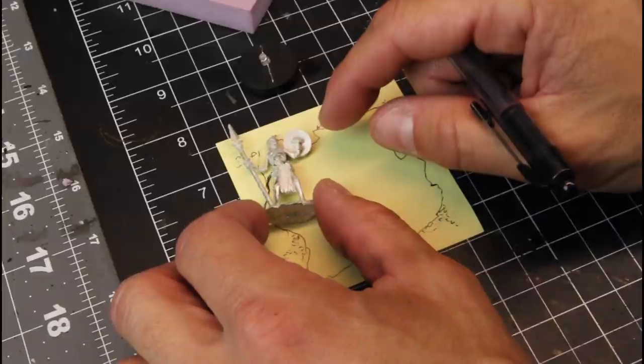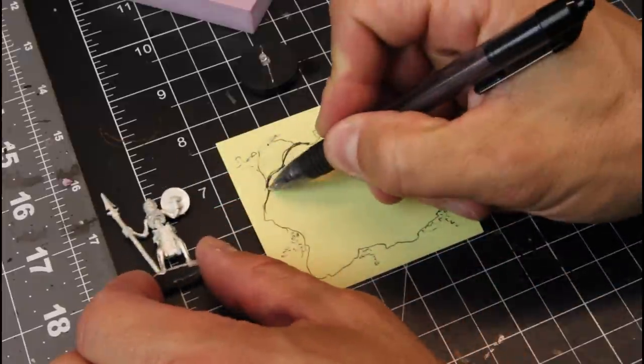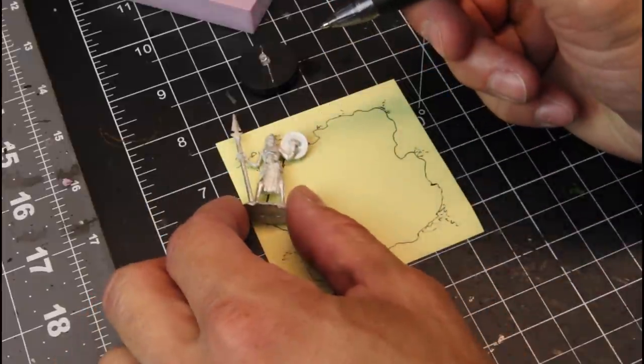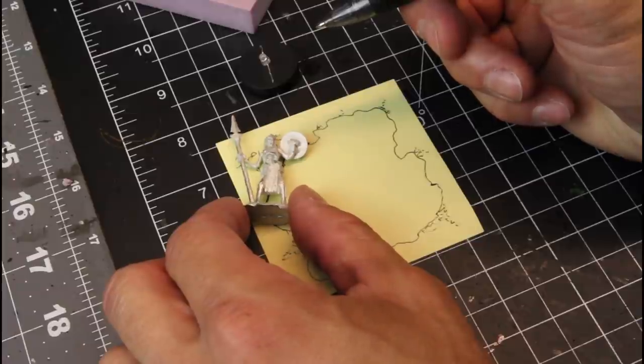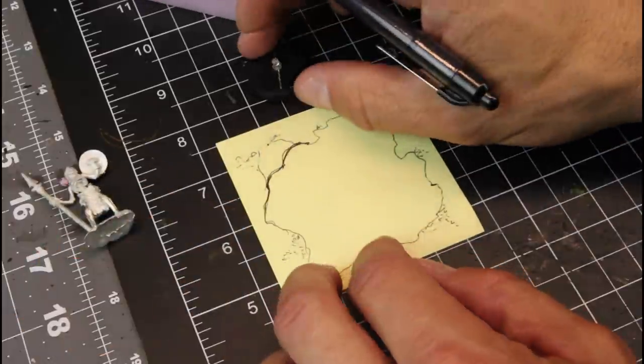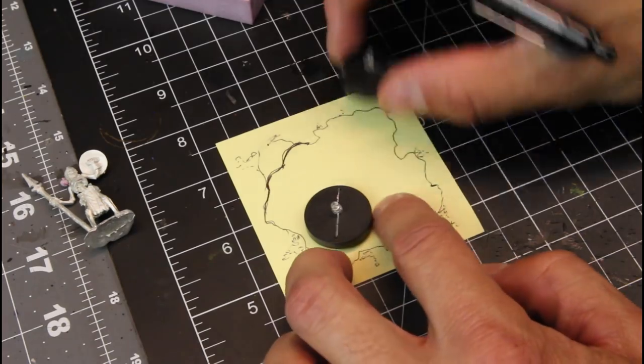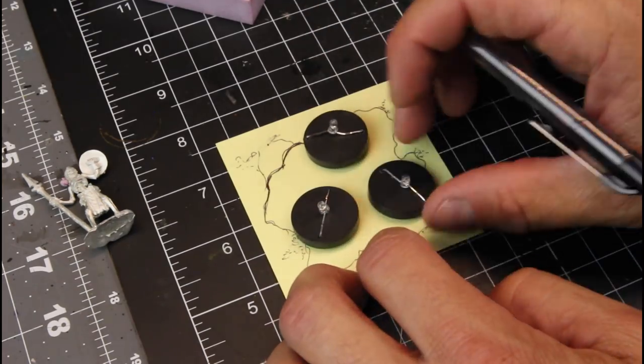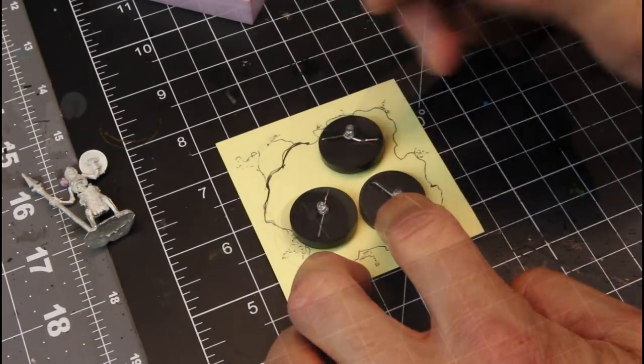So I'm taking this post-it note just so happens that post-it notes are a three by three square. And I drew out the shape of my acid pool. And now I'm going to draw on my three diodes right onto the paper so I have an exact location.